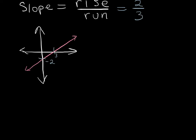For this example I went up 2 units and to the right 3 units. So that gives me my slope: my rise is 2 units and my run was 3 units. That means my slope of this line is 2 over 3. Notice that I went up 2, so I have a positive 2, and I went over 3, so I have a positive 3.